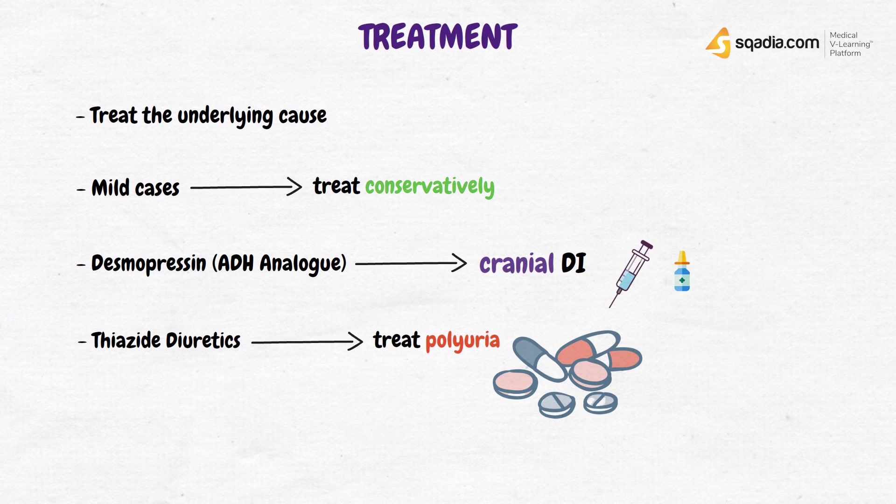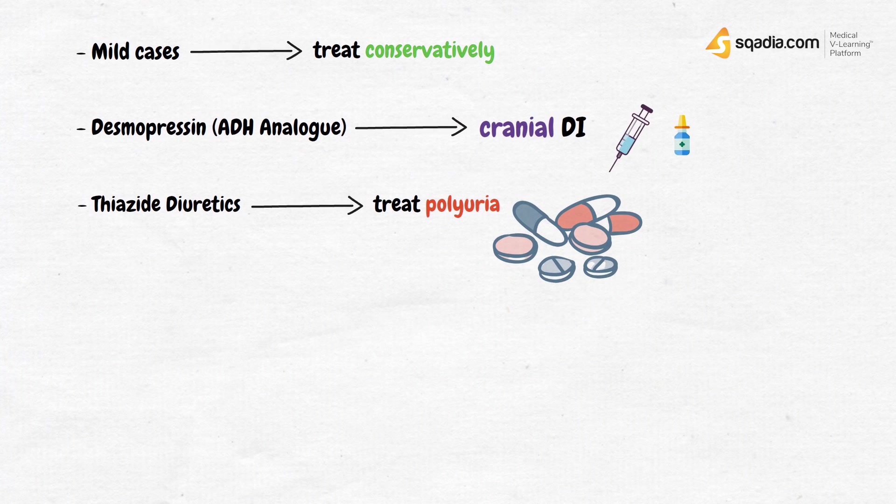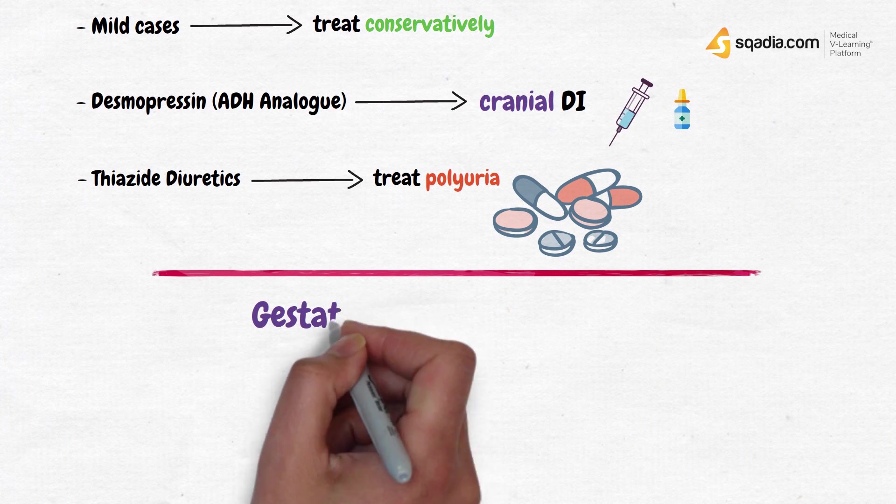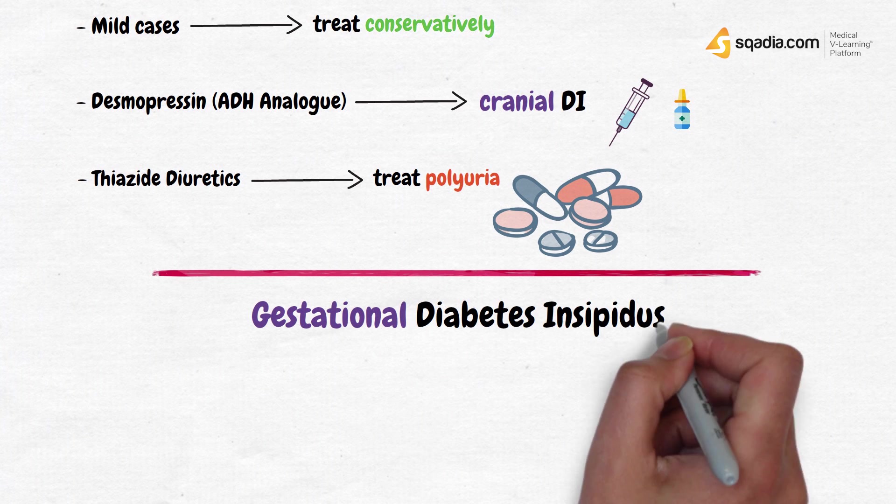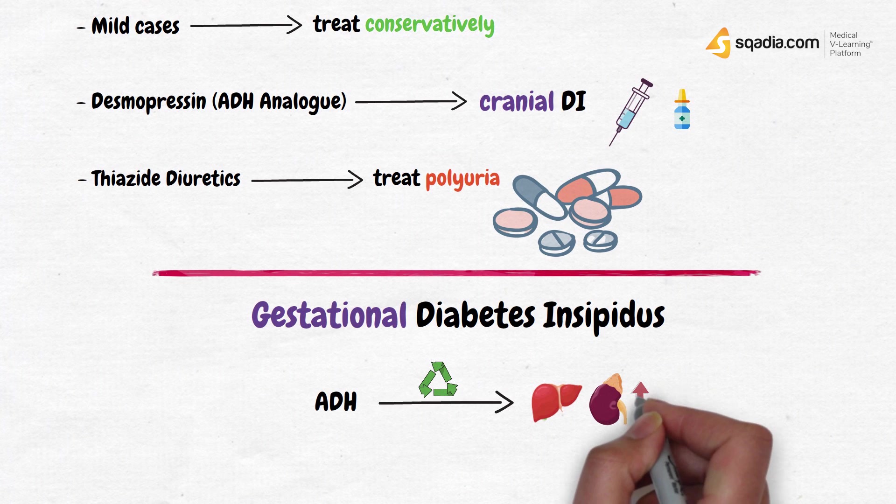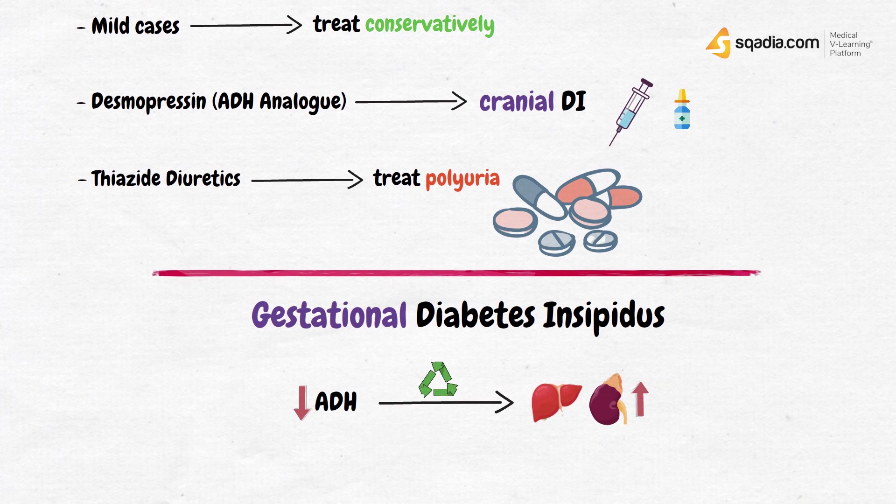Before we finish this lecture, I want to bring your attention to yet another type of this disease, gestational diabetes insipidus. To know how pregnancy causes diabetes insipidus, we should know that ADH is metabolized in the liver and the kidneys. And pregnancy causes increased metabolism of ADH by the liver, resulting in decreased ADH and hence diabetes insipidus.